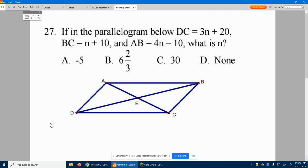It says DC, D to C is 3N plus 20. So this length is 3N plus 20. That expression represents that length. BC, where's B to C? This length right here is represented by N plus 10, that expression. And AB is 4N minus 10.